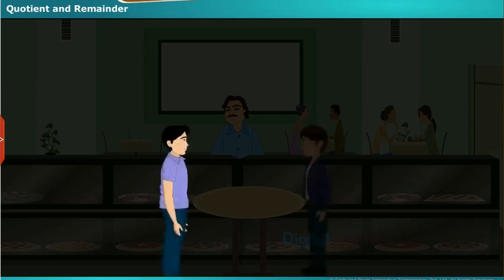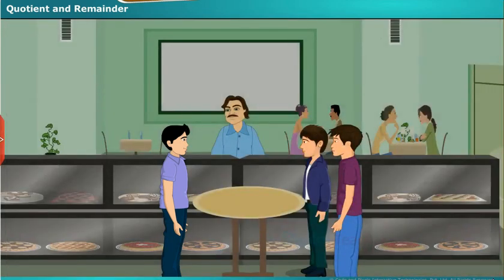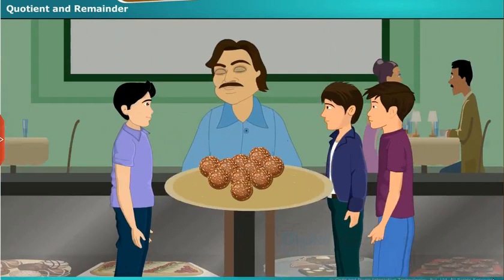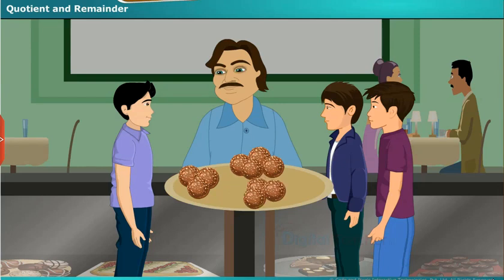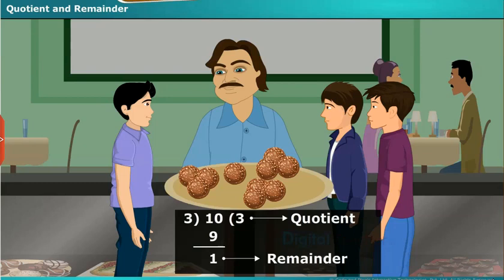Pavan, Sandeep, and Abhishek went to a sweet shop to buy sweets. Pavan asked the person to give dry fruit sweets for 160 rupees. Then he gave 10 sweets. Sandeep divided them and gave 3 sweets to Pavan, 3 sweets to Abhishek, and he also took 3 sweets, but there is one more sweet which can't be divided. So they left it as the remainder. This can be written as shown on screen.